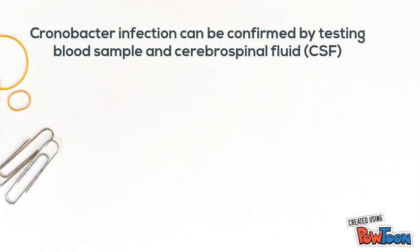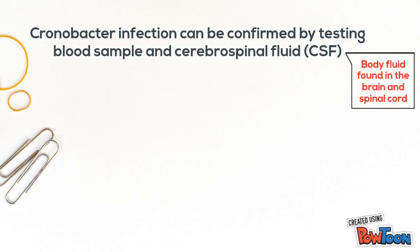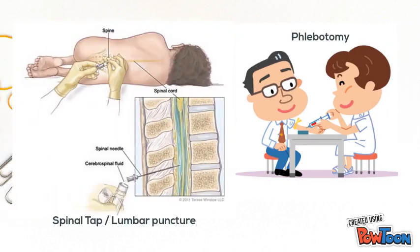Chronobacter infection can be confirmed by testing blood sample and cerebrospinal fluid. This can be done by performing phlebotomy and spinal tap or lumbar puncture.